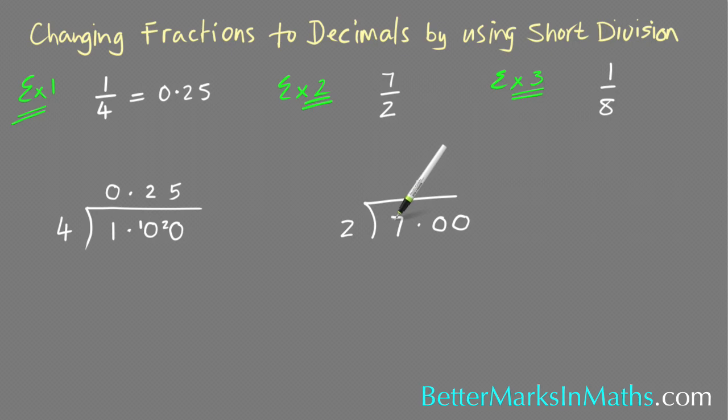Then how many twos in seven? There's three, there's one left over, so put that in front of the zero. How many twos in ten? There's five, and there's none left over. So that's what seven over two is equal to—it's equal to three point five. And another way of reading this is seven halves.